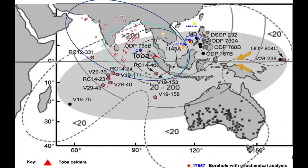The Middle Pleistocene supereruption of Toba at 788 ± 2.2 thousand years overlaps the tektite ages of 789 thousand years. There may be a connection between the Southeast Asian impact and the Toba eruption, as volcanic glass is found in sediments with microtektites far to the east of the volcano.